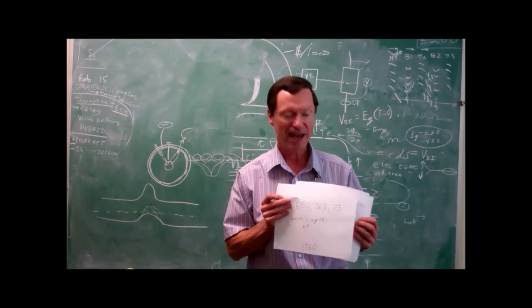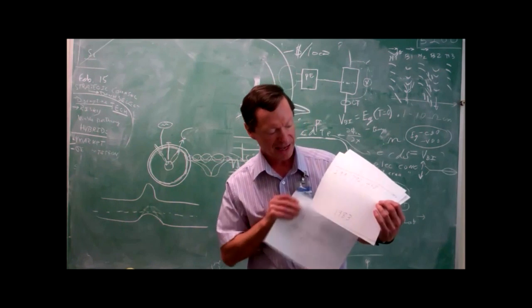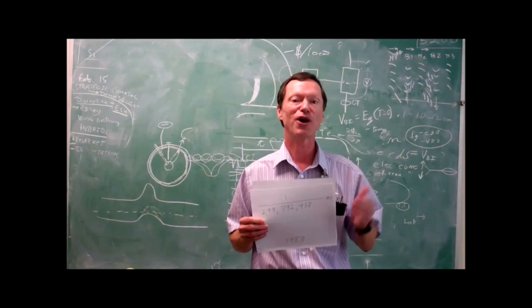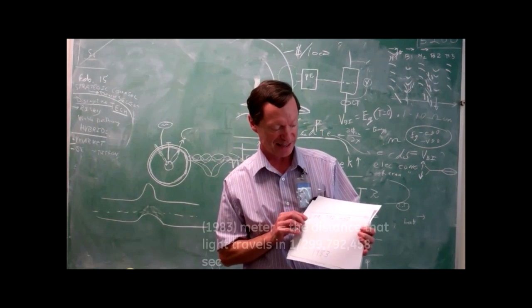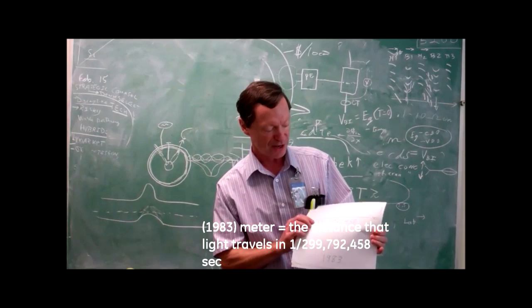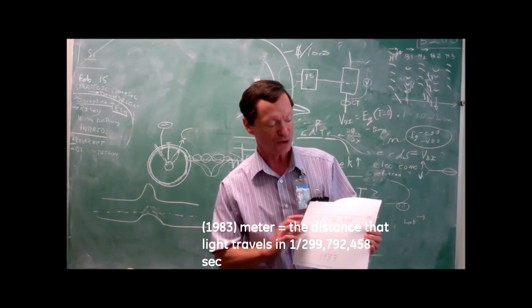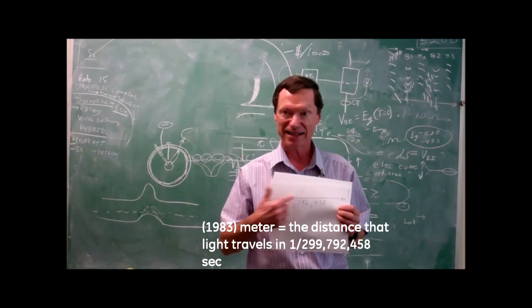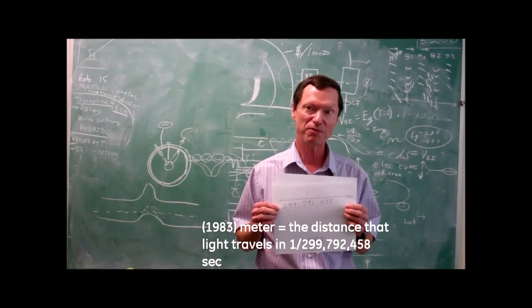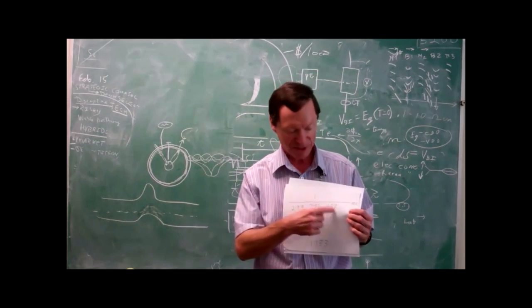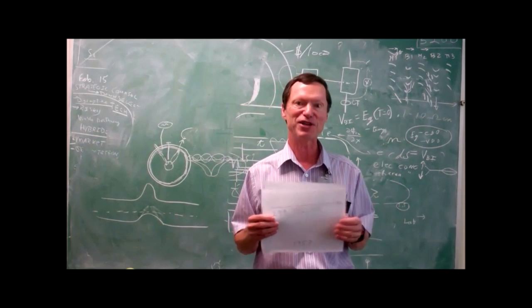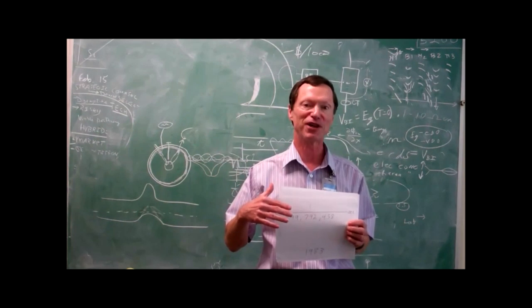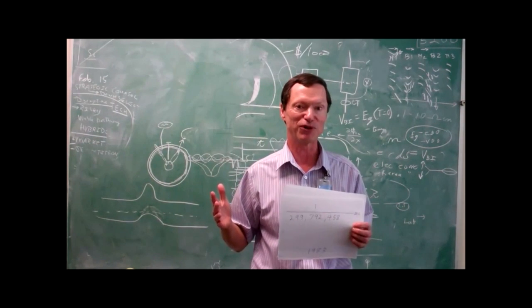And then finally, in 1983, we got to the current definition, which is the one that you quoted in your question, which says that in 1/299,792,458 of a second, in that time, the distance that light travels will be 1 meter. Why did they pick that number instead of an even number? It's the same reason again. We were trying to keep the meter unchanged from its original definition so that people's measurements all over the world didn't change.